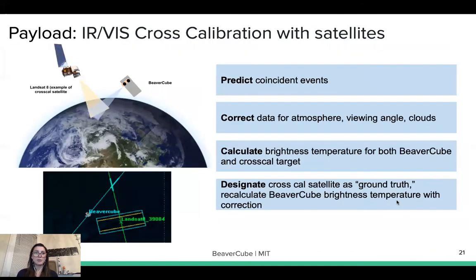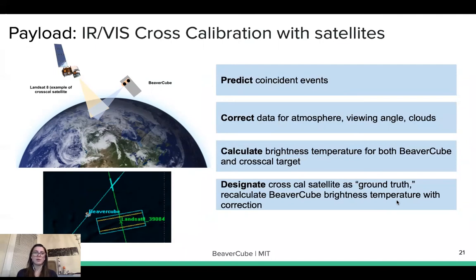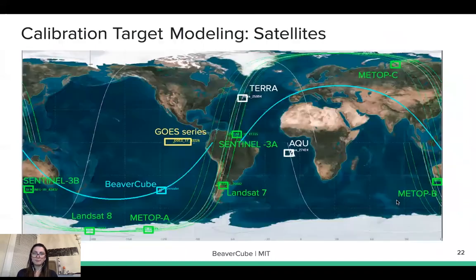We can also perform cross-calibration with other satellites by predicting coincident events, correcting data for the atmosphere, viewing angles, and clouds, and then calculating the brightness temperature for both BeaverCube and the cross-calibration target satellite. We will consider the cross-calibration satellite as a good ground truth and calculate the BeaverCube brightness temperature to match those. These are the satellites we can use for this cross-calibration.